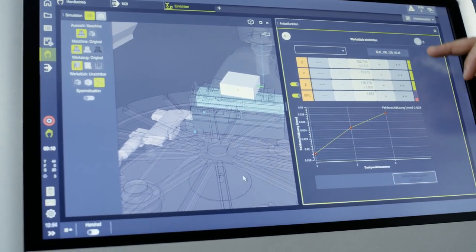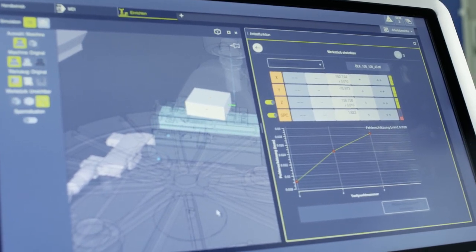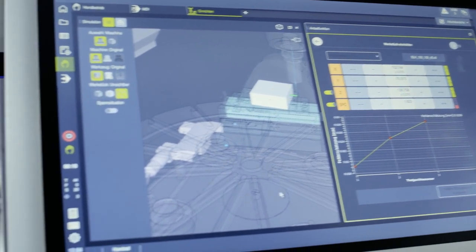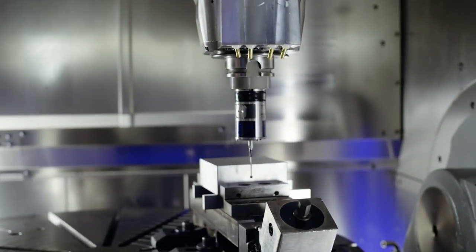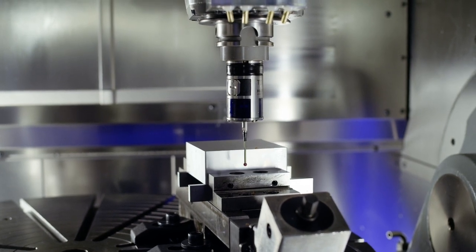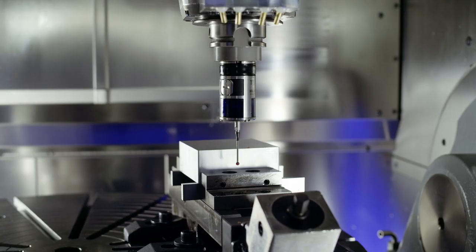Our traffic lights show that X, Y, and Z have already been fully measured, but the rotation at the bottom is still missing. I need a second probing point there. Then I confirm that with NC start, and the workpiece is now completely aligned.